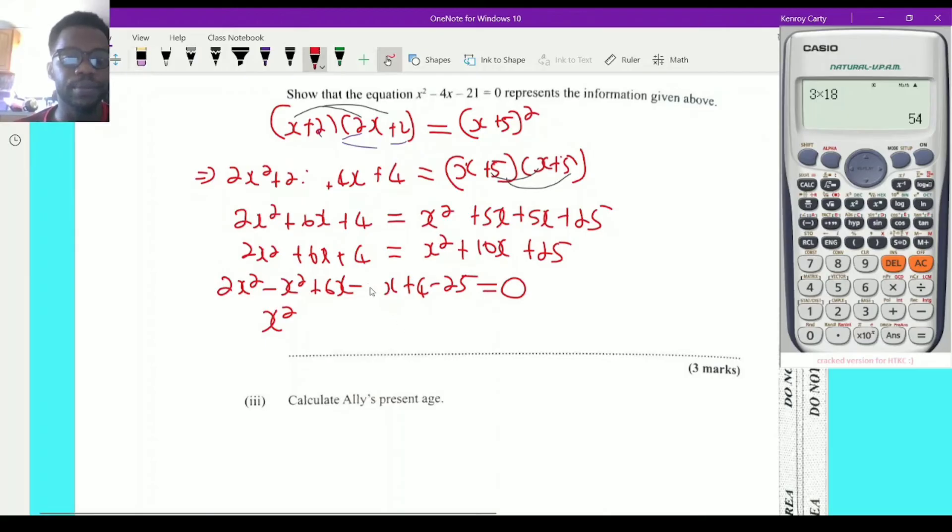So it's 6x minus 10x which is negative 4x, and of course you have 4 minus 25 which is negative 21 and everything is equal to 0. So let me point this out again. When I brought over the terms, the x squared comes over so it's been subtracted. 6x is here already, the 10x is positive so when you carry it over it's minus 10x. 4 is there, 25 is positive so it comes over as a minus 25 and that is the end of that part.